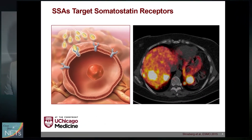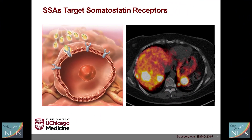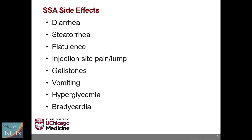SSAs work by targeting somatostatin receptors, which are found in neuroendocrine tumor cells. We can detect the presence of these receptors by doing DOTATATE PET scans. More than 80% of GI neuroendocrine tumors express somatostatin receptors, and therefore SSAs are the mainstays of systemic therapy.